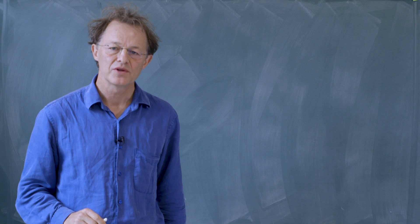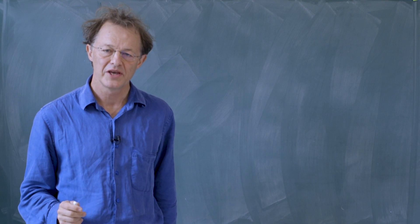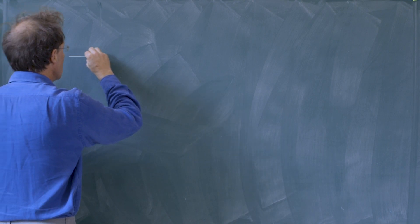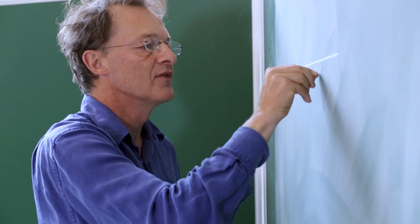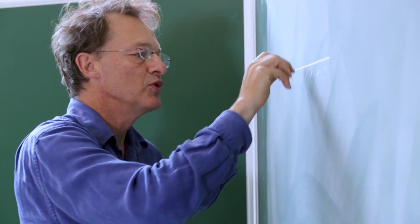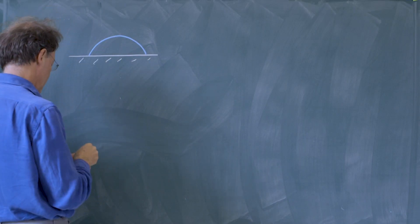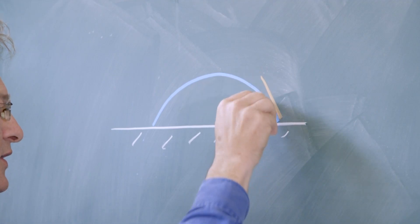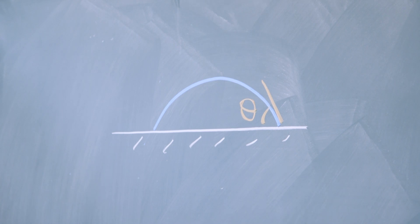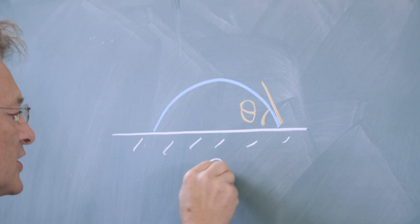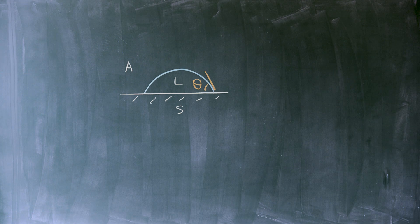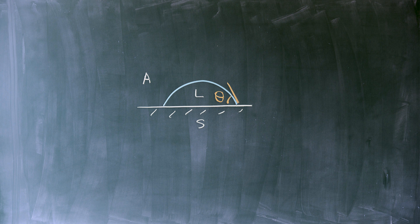We can now understand what fixes the contact angle made by a liquid on a solid. For this purpose, we can make a sketch of the solid on which we deposit a drop of liquid, and this liquid meets the solid with the unknown contact angle theta. Because the contact angle is a very local quantity, we can make a zoom on this region.